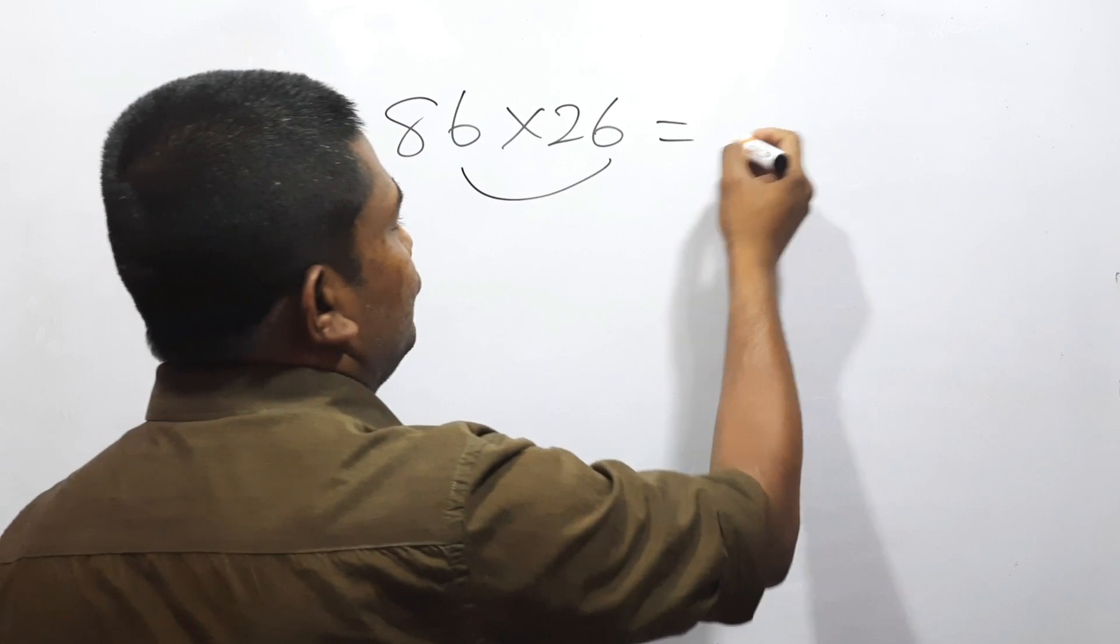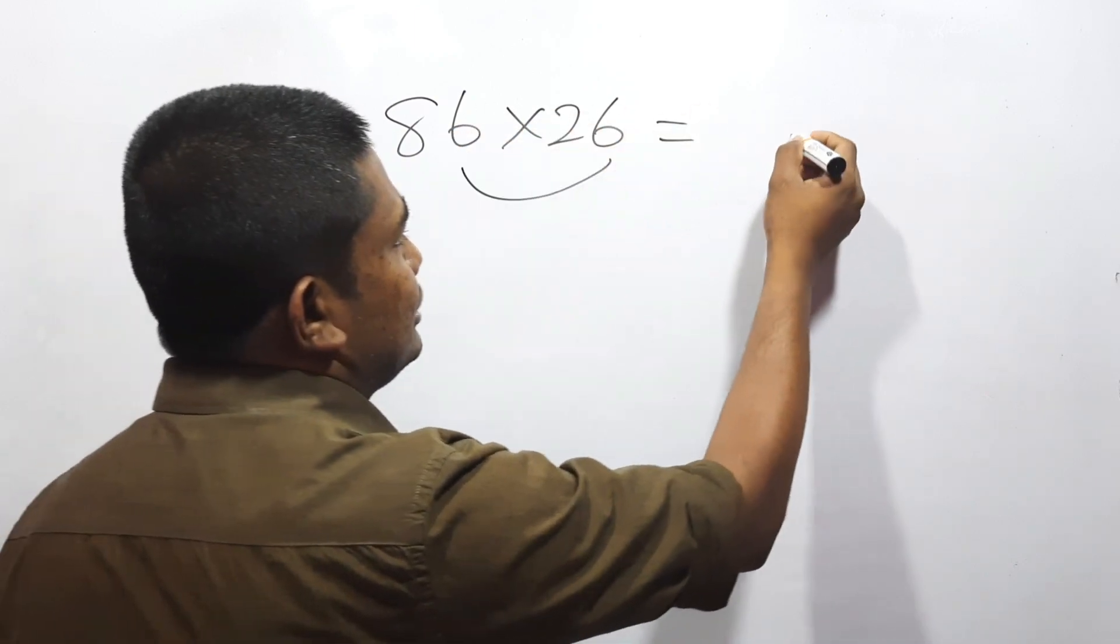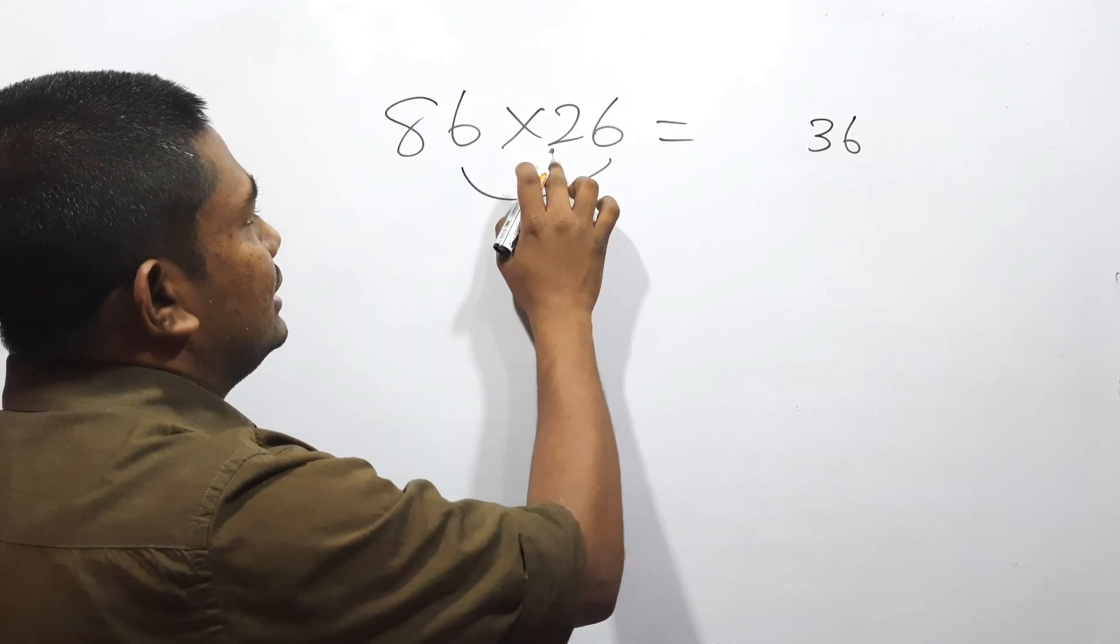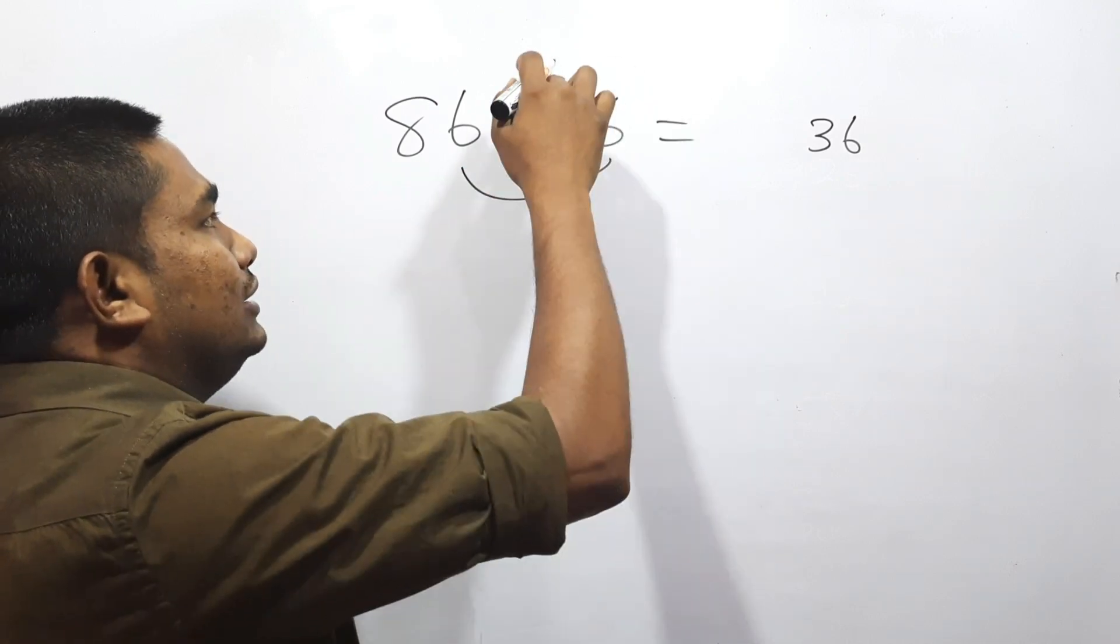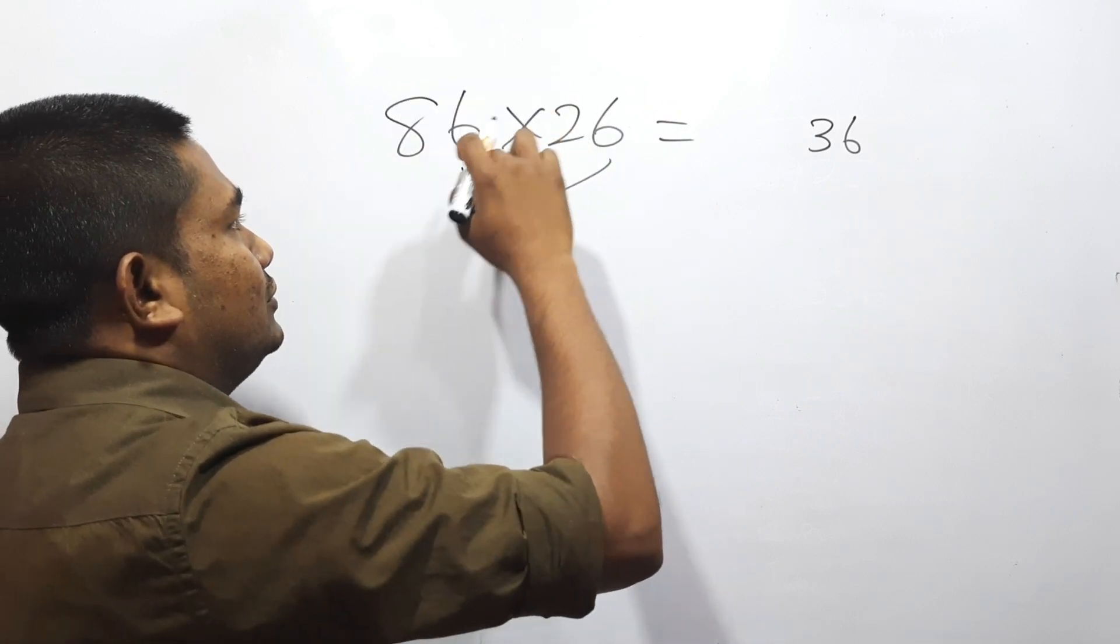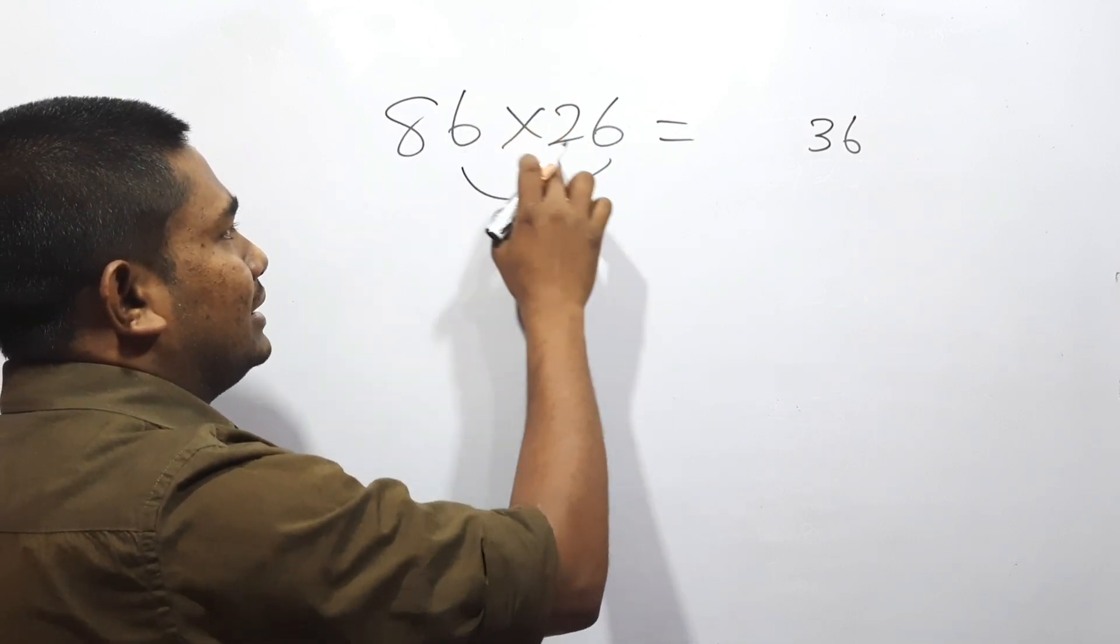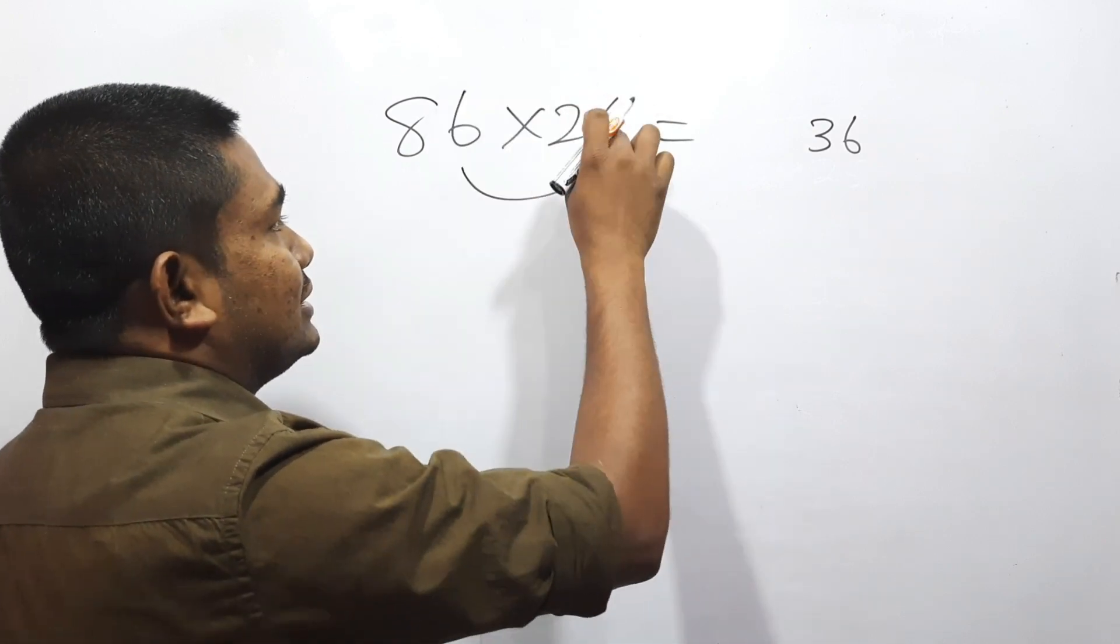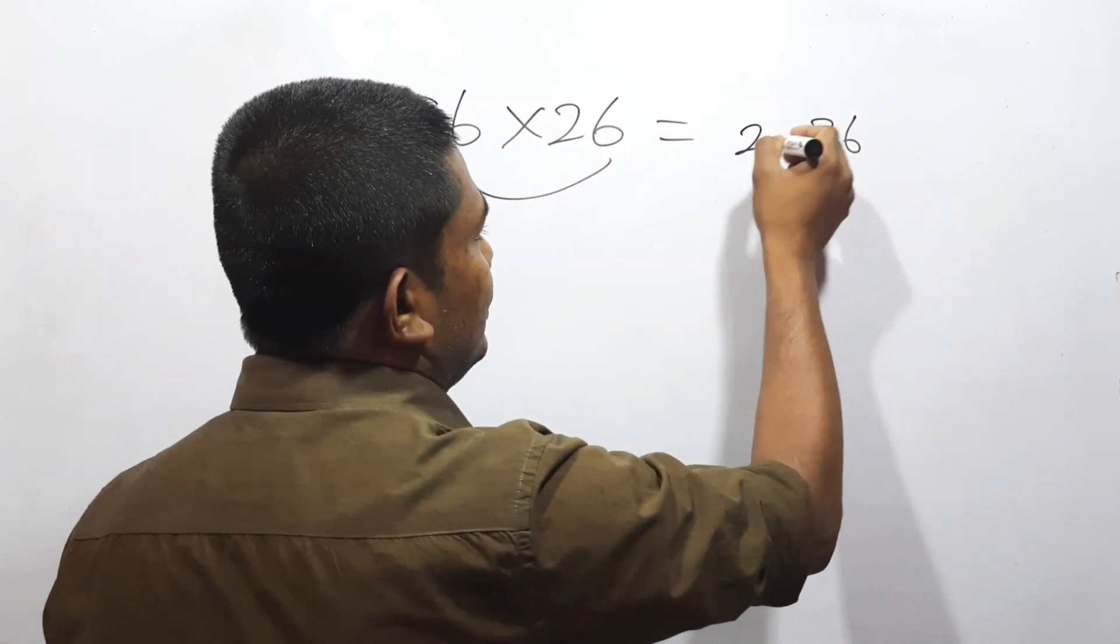6 into 6, we need to multiply unit place numbers - 6 into 6 is 36. And also we need to multiply tens place: 8 into 2 is 16. For 16, we need to add the unit place number 6. That will be 22. So 2236 is the answer.